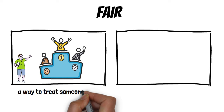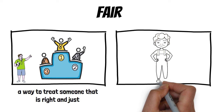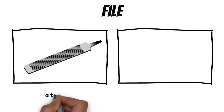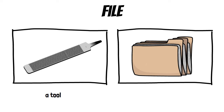Fair: the first meaning is a way to treat someone that is right and just, and the second means light skin or hair. File: the first meaning is a tool, and the second is a container for documents.